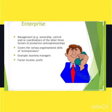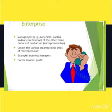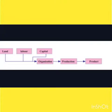Organization implies the coordination of various factors of production like land, labor, and capital. The person who coordinates or who maintains the organization is called an organizer or entrepreneur. Looking at this picture, it shows land, labor, and capital — these three are connected to organization, and through this process of production it at last becomes a product. This is the role of an organization or organizer in the production process.